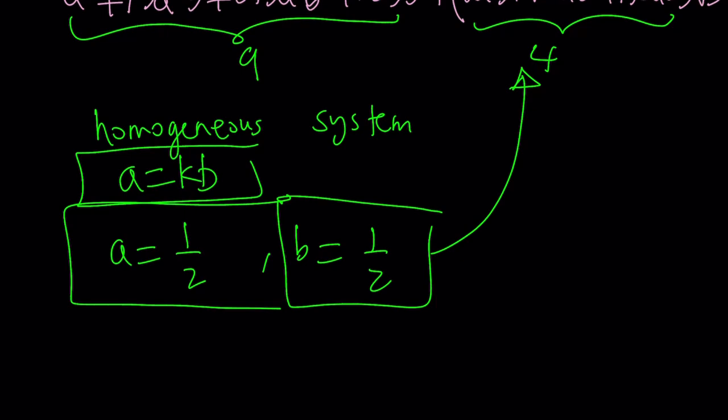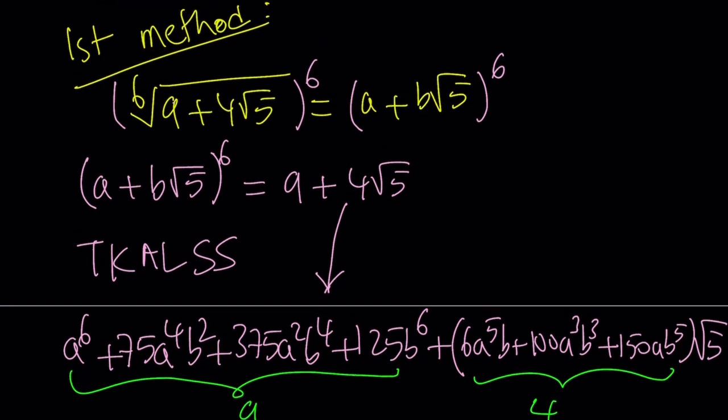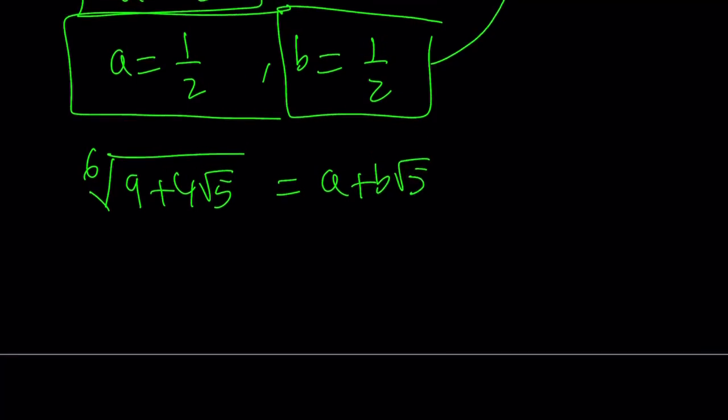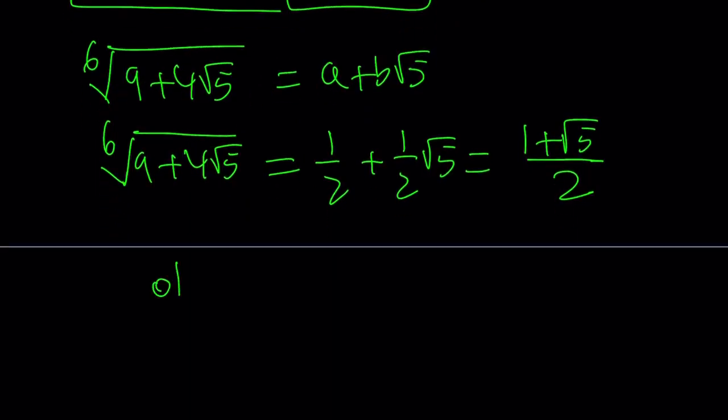So what is that supposed to mean? Well, I assumed that my sixth root is going to equal a plus b root 5. Our initial assumption was that the 6 root of 9 plus 4 root 5 is going to equal a plus b root 5, and we found that a and b are both 1 half. Therefore, the expression we're trying to simplify is equal to 1 half plus 1 half root 5, which can also be written as 1 plus root 5 divided by 2. And this we can call old but gold. Awesome.